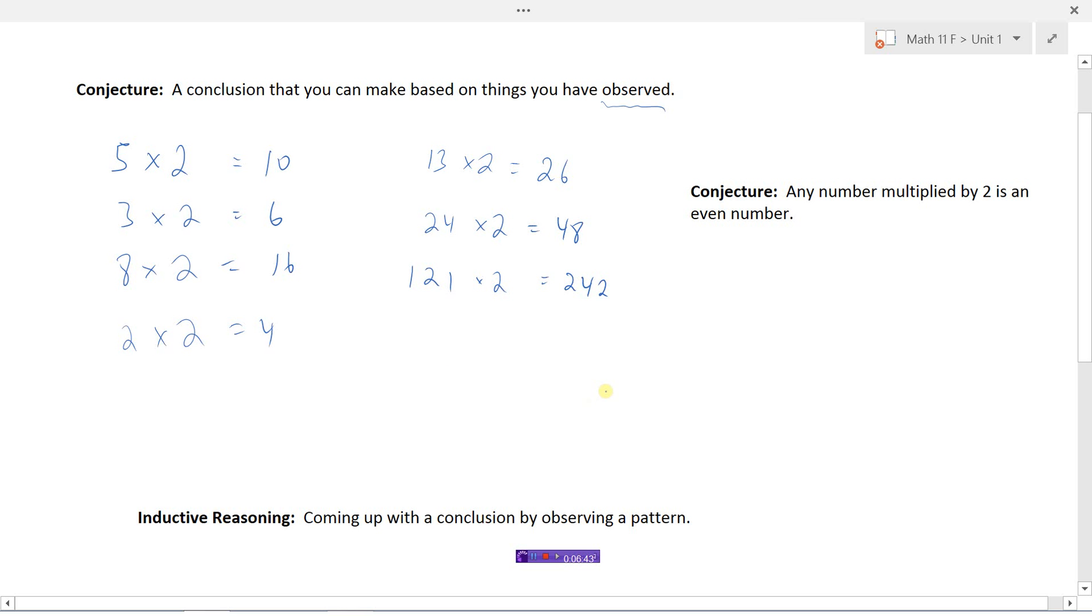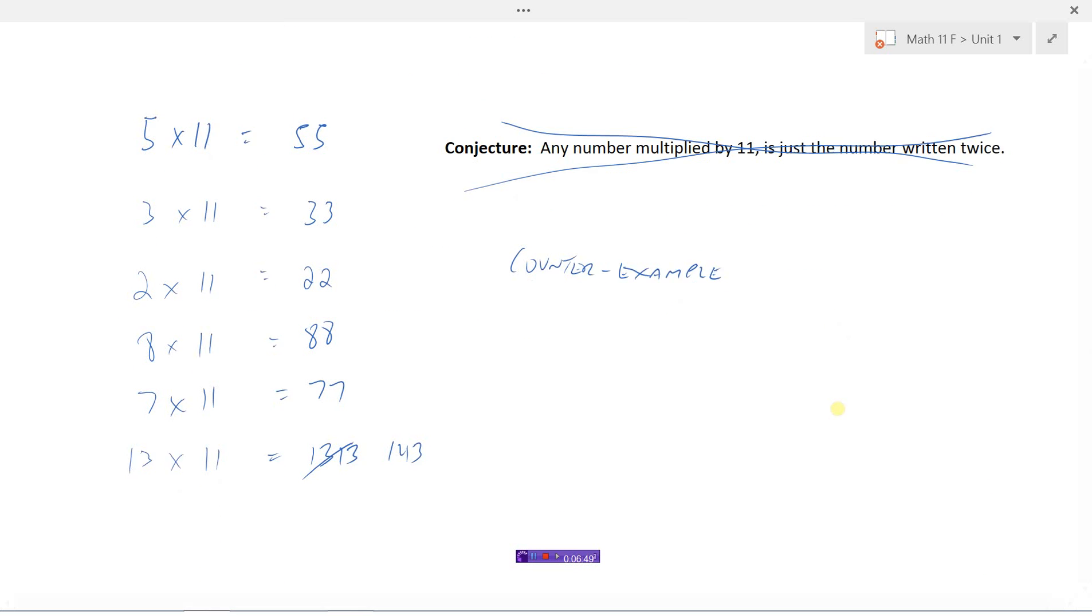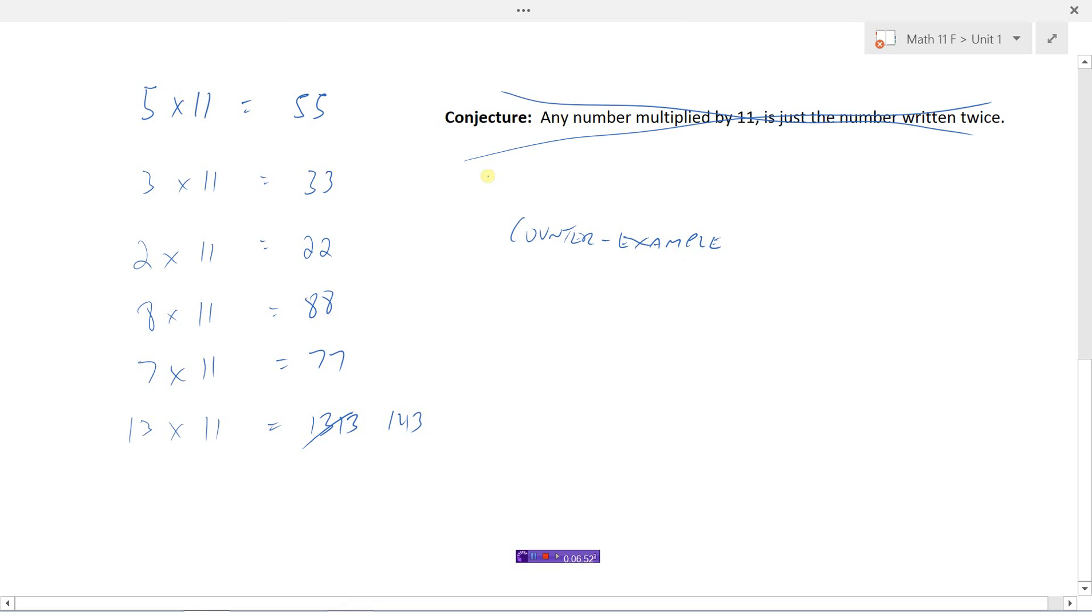Again, the more examples that we can demonstrate, the more convinced we are of our conjecture. And if we do happen to come up with a counter example, then our conjecture is no good.